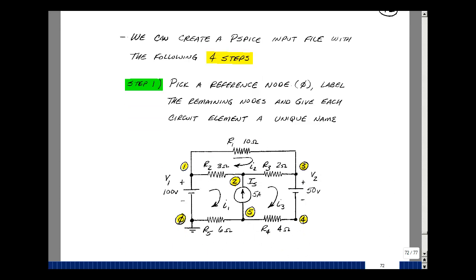We'll do this in four steps. The first step is to pick one node and call it your reference node. This would be essentially ground, or we'll label it as node zero. I'm going to label the remaining nodes with just numbers, 1 through 5. We also have to assign a unique name to every component in our circuit. So I'll call this resistor R1, R2, R3, R4, R5, and then V1 and V2.